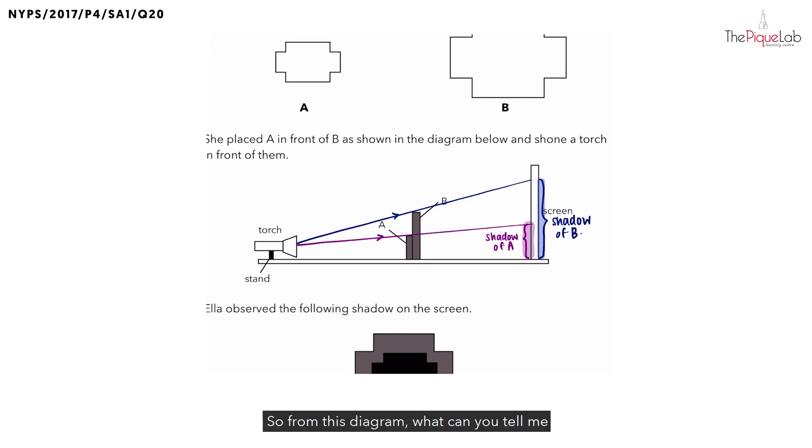So from this diagram, what can you tell me about the size of the shadow of A and B? We can tell that the shadow of A is actually much smaller than the shadow of B. That means object A actually forms the smaller shadow, whereas object B forms the larger shadow.